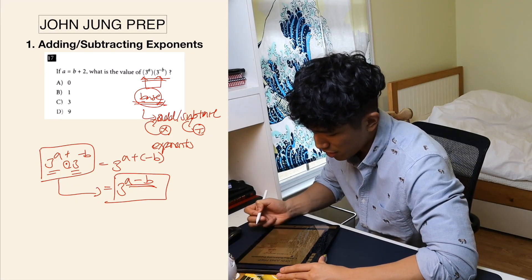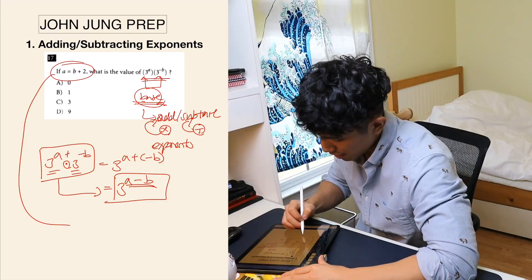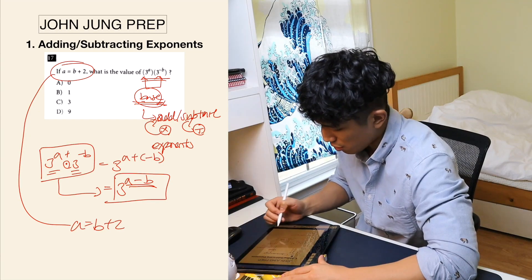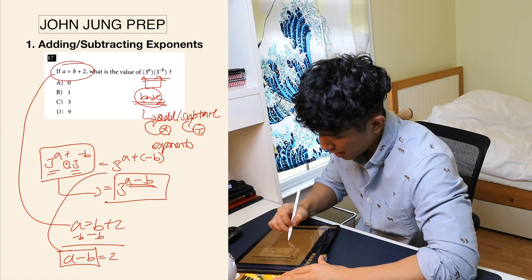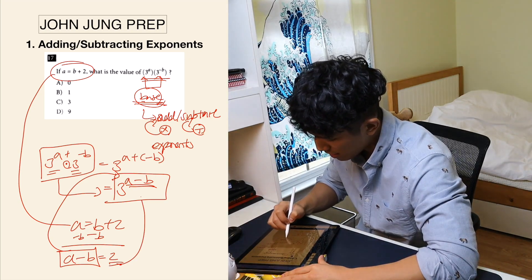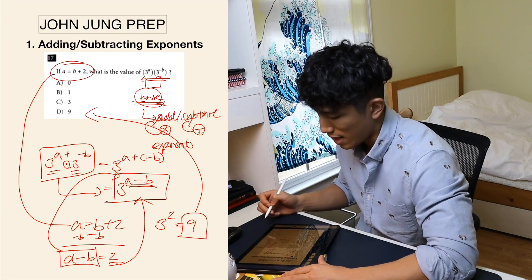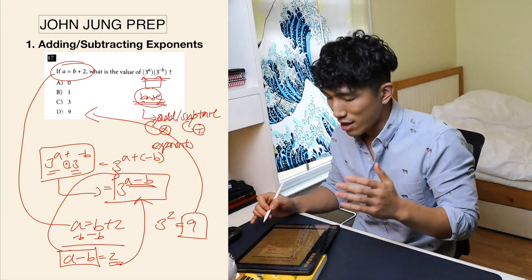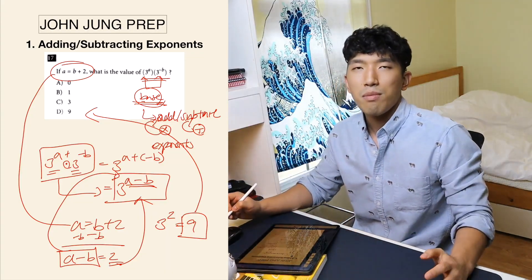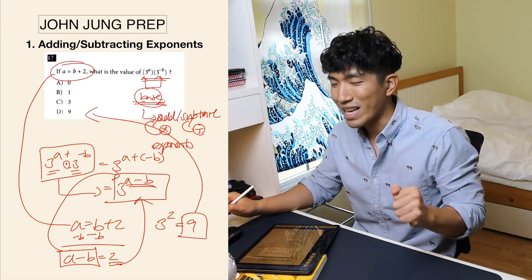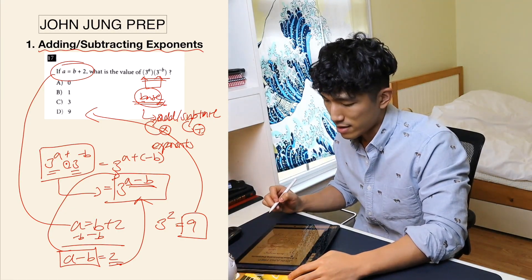Now we have 3^(a − b) and we need to find what a − b is. The question gives us a = b + 2. If we move b to the left, it becomes a − b = 2. So we substitute 2 into the exponent, which gives us 3² = 9. Our answer is 9. What most people do is try to plug in numbers for a and b, which gets complicated and wastes time on the SAT. Understanding when to add and subtract exponents is much faster.